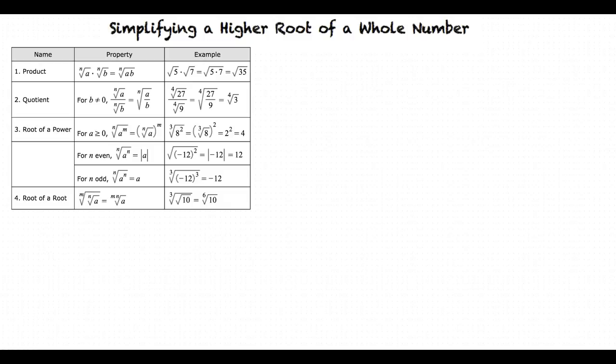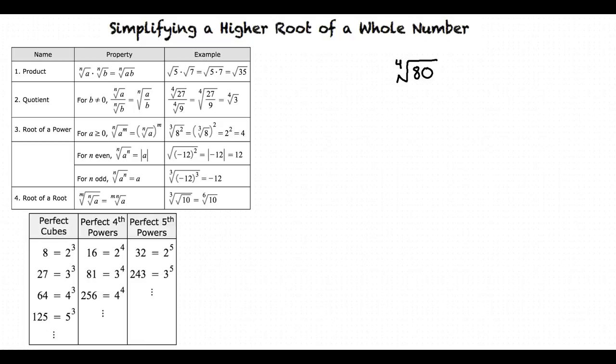Now let's look at an example. Write the following in simplified radical form. We are simplifying a fourth root, so we can look for numbers that are perfect fourth powers. We can see those in the middle column of the table. We want to look for a number that is less than 80, since that is the number we are simplifying. We can rewrite 80 as two factors.